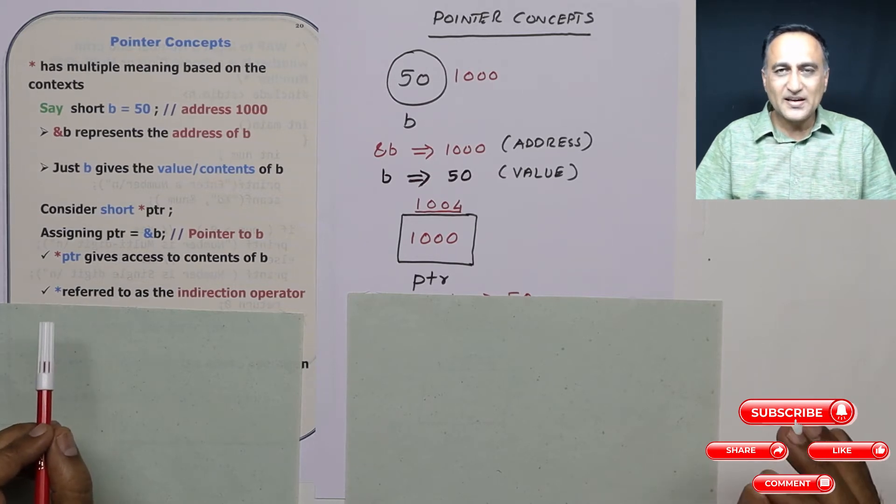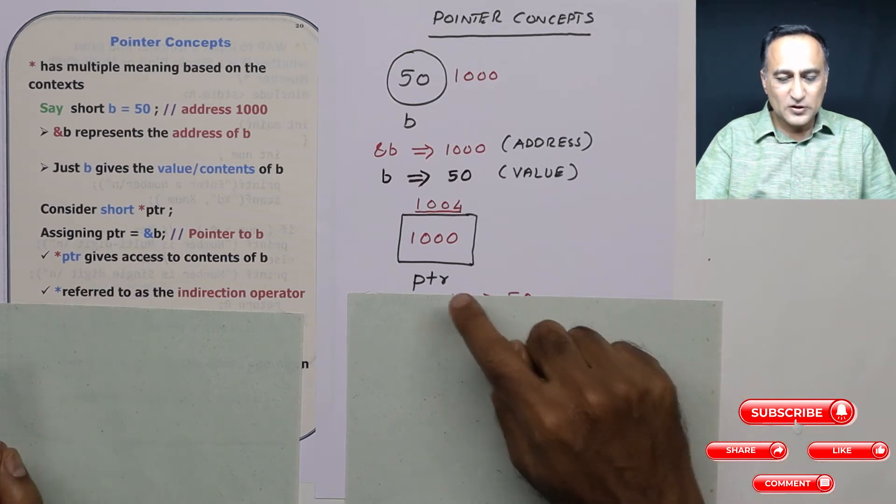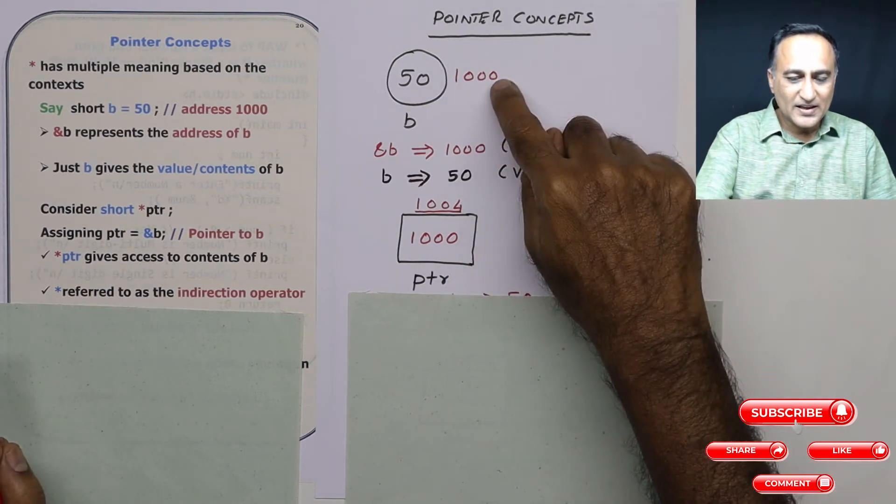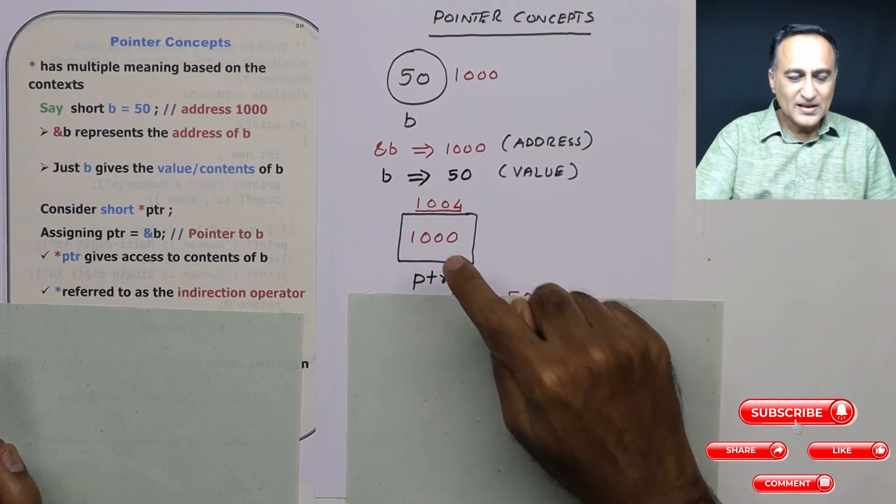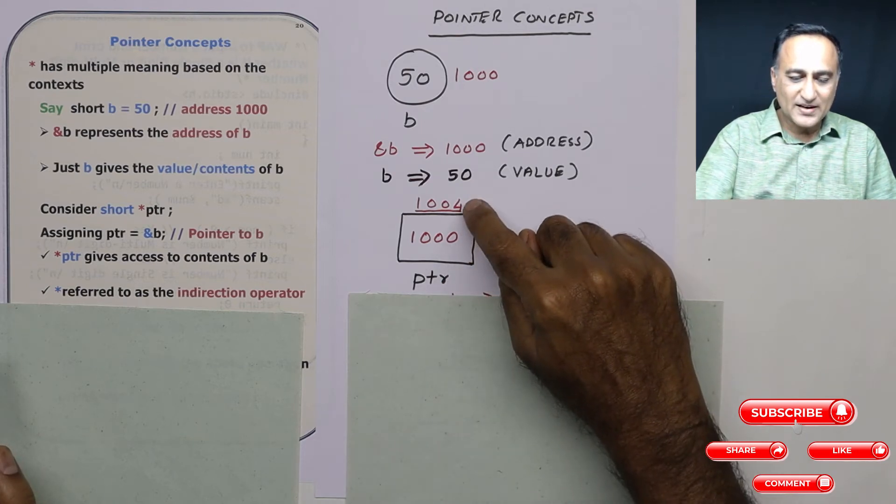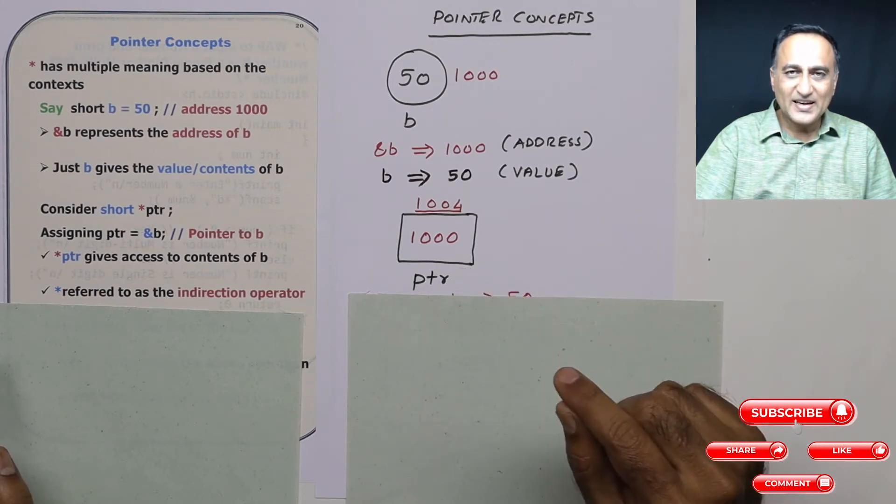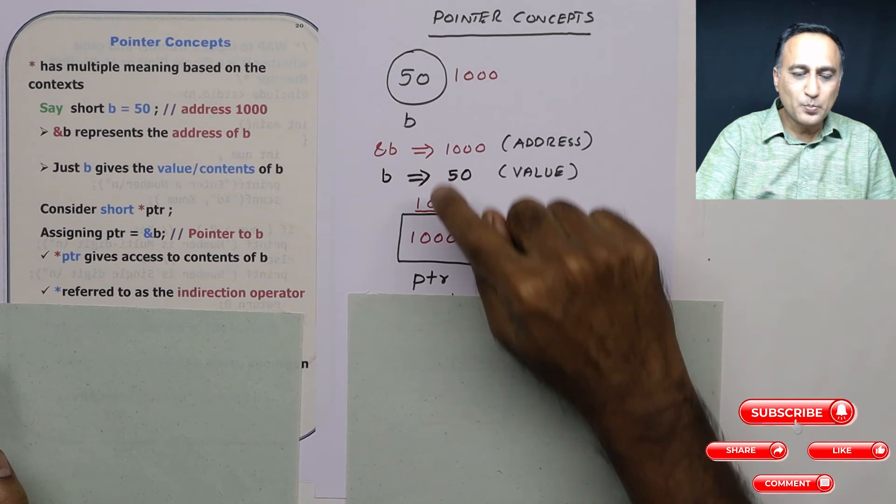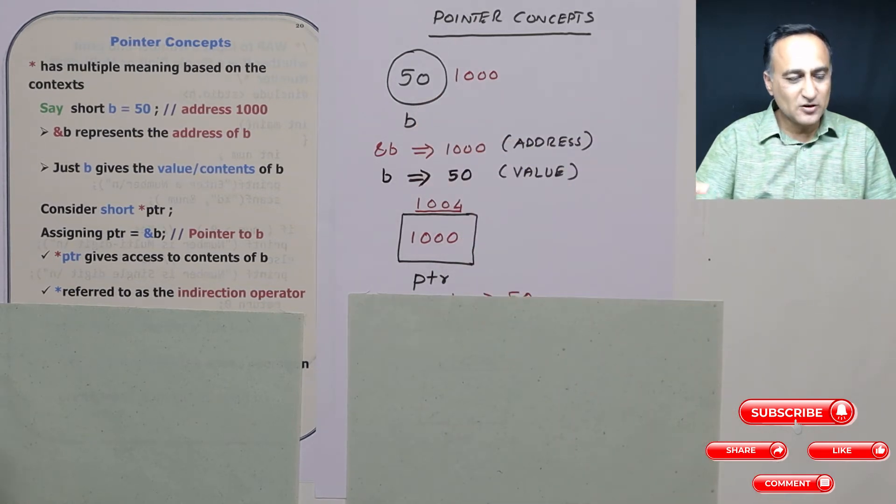Since ptr can contain address, say I give ptr the address of b. So ptr is going to contain the address 1000. 1000 happens to be the address of b. Since ptr itself is a variable, ptr also has an address at 1004. So when I say ptr contains the address of b, technically I can say ptr points to b or ptr contains the address of b.